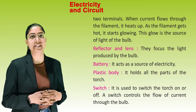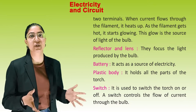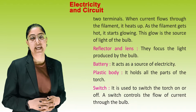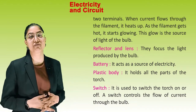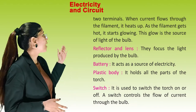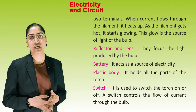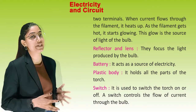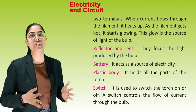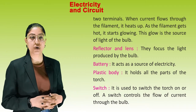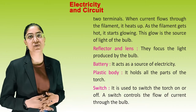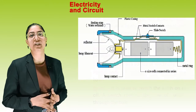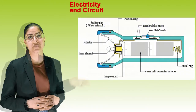Next is the reflector and lens — they focus the light produced by the bulb. Next is the battery, which acts as a source of electricity. Next is the plastic body, which holds all the parts of the torch. Next is the switch, used to switch the torch on or off. A switch controls the flow of current through the bulb. Let's see the diagram of the torch for better understanding.